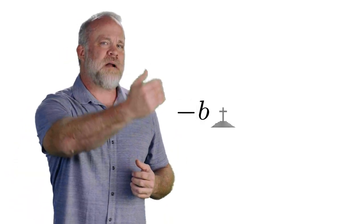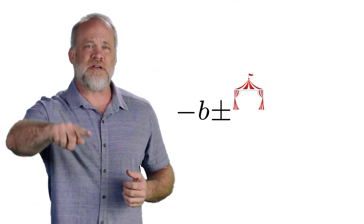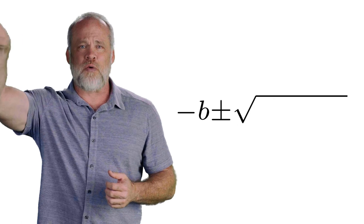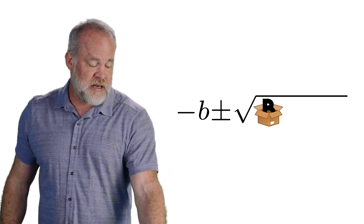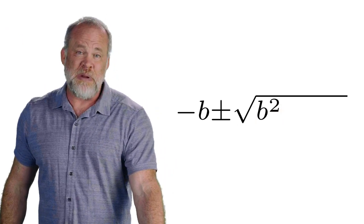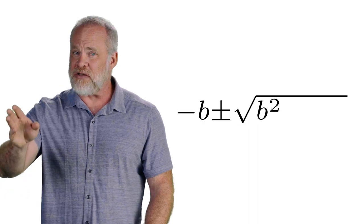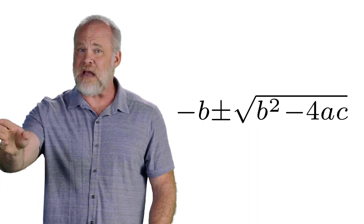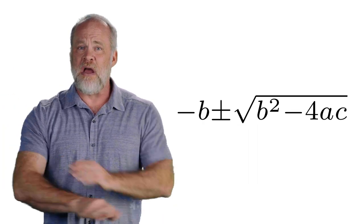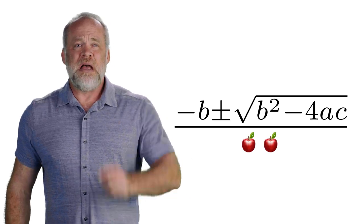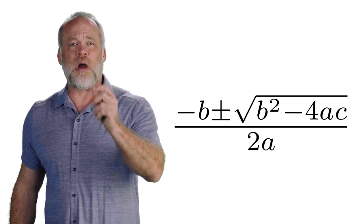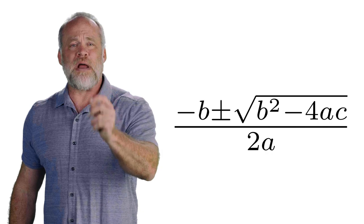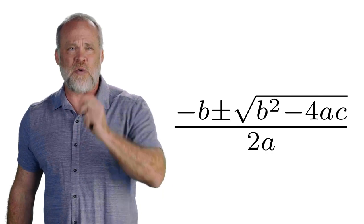One last time, a negative B lands on a plus sign, a cross plus or minus, flies into a circus tent, the square root. In the circus tent, a B in a square, B squared. Also in the circus tent is a car with the AC on, minus 4AC over two apples. Negative B plus or minus the square root of B squared minus 4AC over 2A is the quadratic formula.